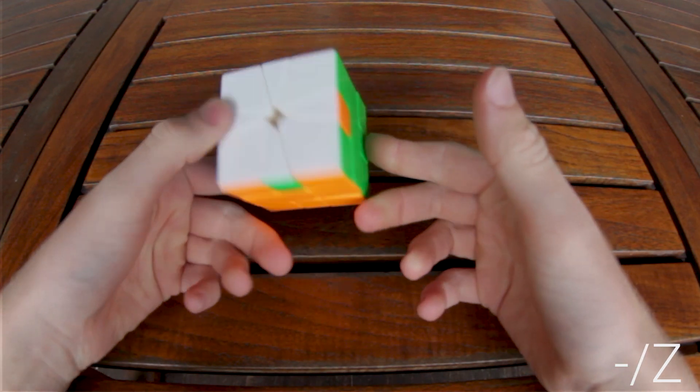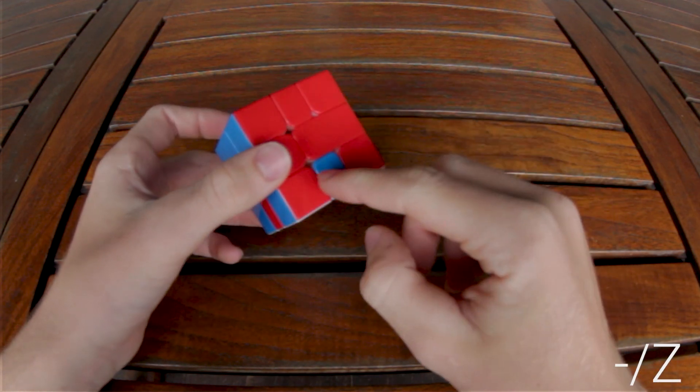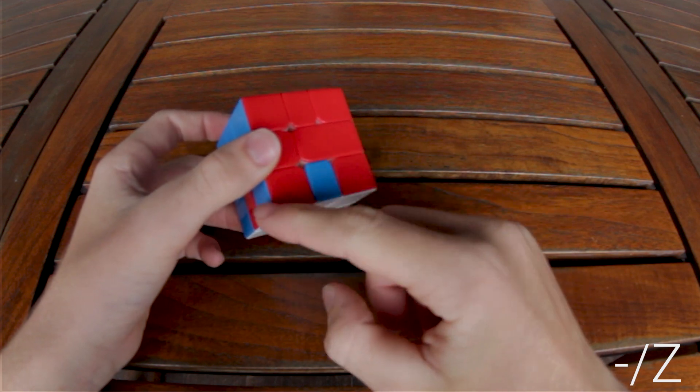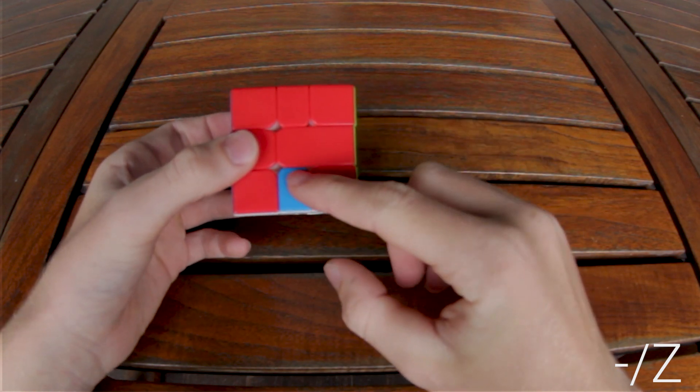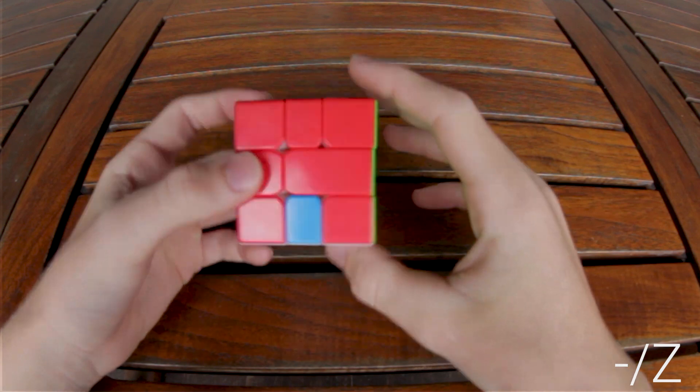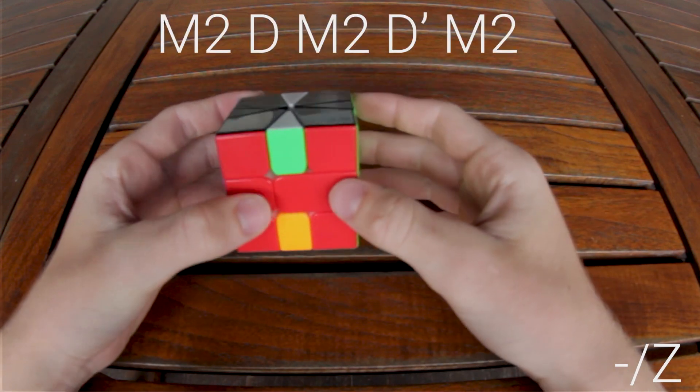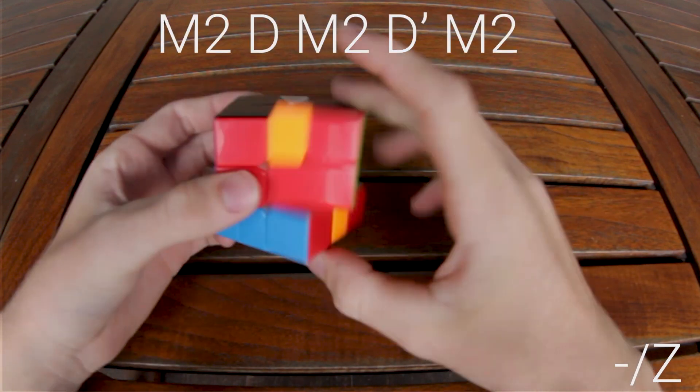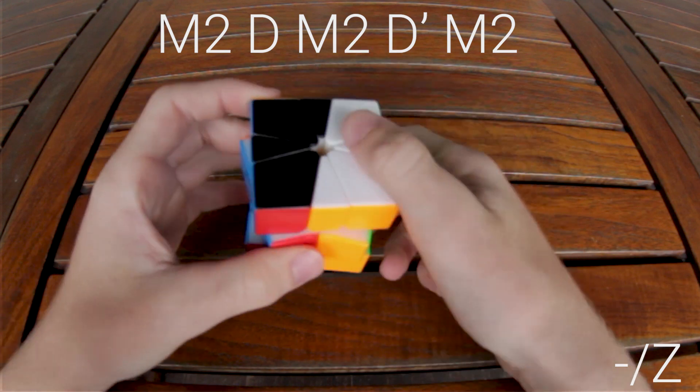On the bottom it's the same thing. You look at where the blue needs to go. In this case it's still left, so your D move will be the opposite direction. So M2, D, M2, D prime, M2.